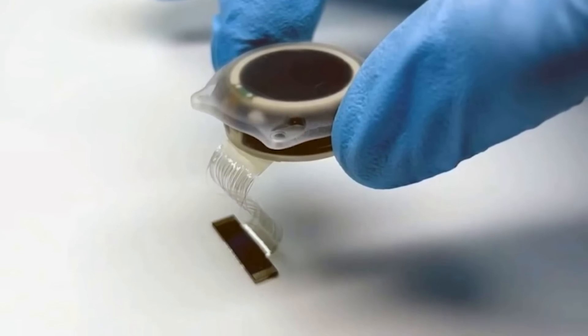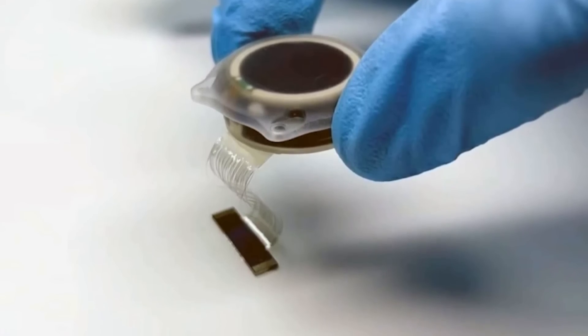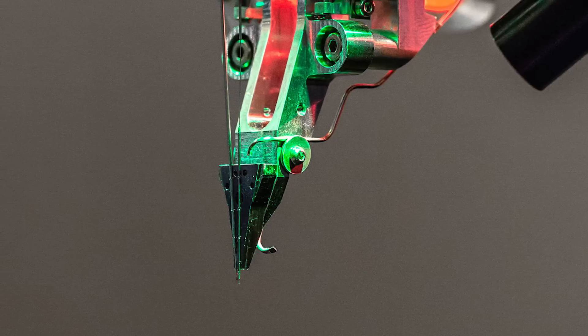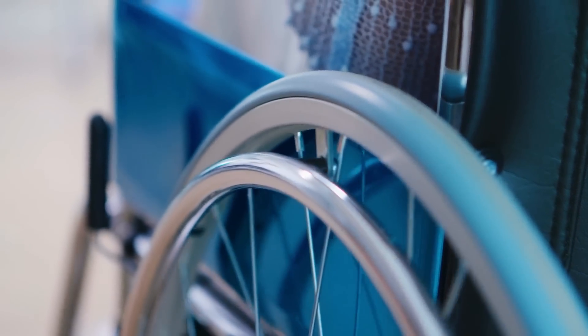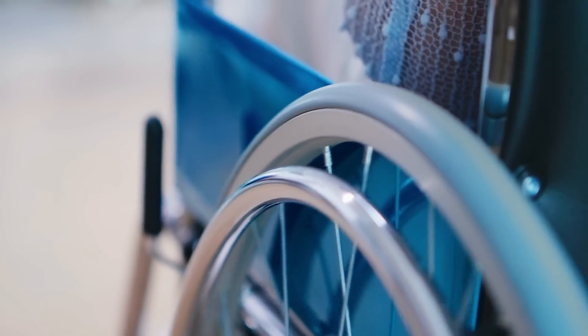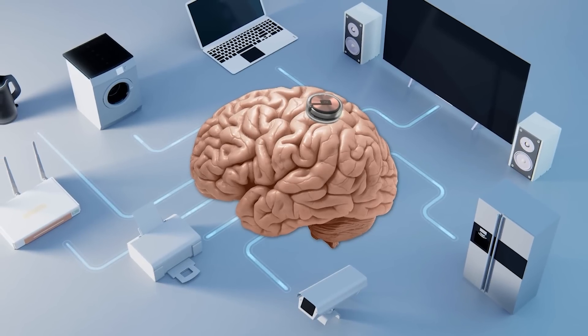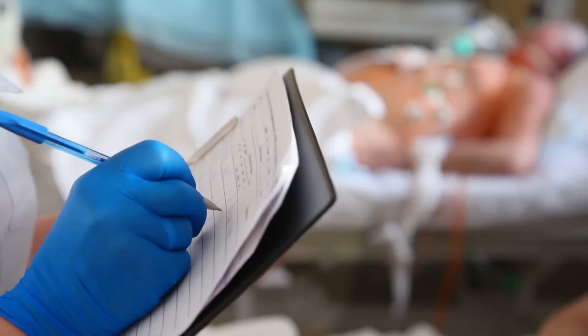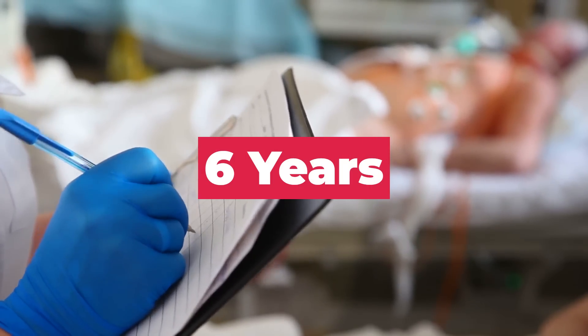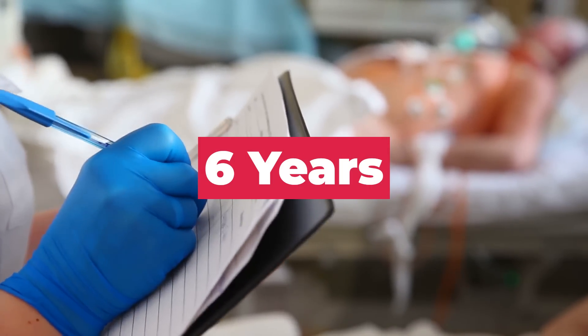It will also assess the initial functionality of the N1 in enabling people with paralysis to control external devices with their thoughts. It's expected that the first human trial will take up to six years for Neuralink to complete and verify their findings.